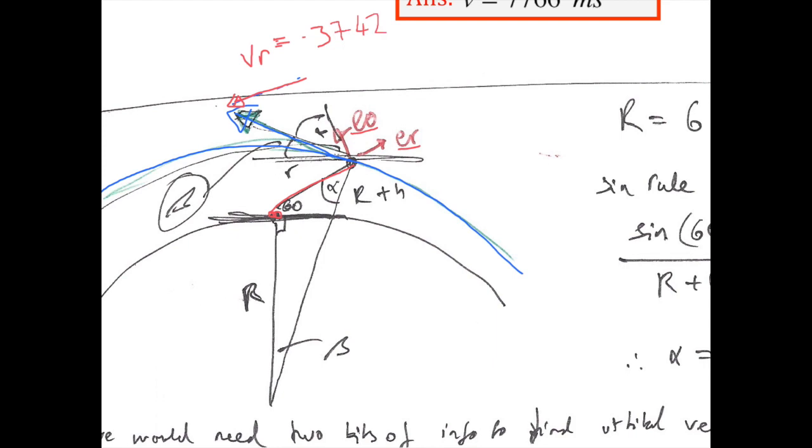What we need to find from here, in order to get V in the blue line, is the angle alpha. Once we know alpha, once we know this angle, then we can find that.